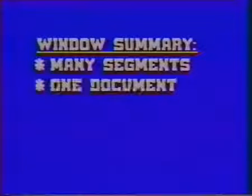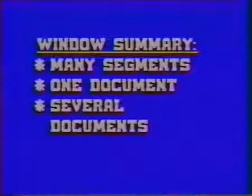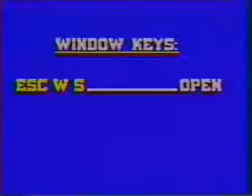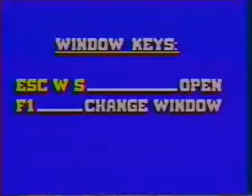Here are the major points. Windows are used to work on many text segments at the same time. The segments can all be in one document or in several different documents. A window is opened with Escape, W, and S keys. The F1 key activates a different window. Use the Escape, W, and C keys to close a window.